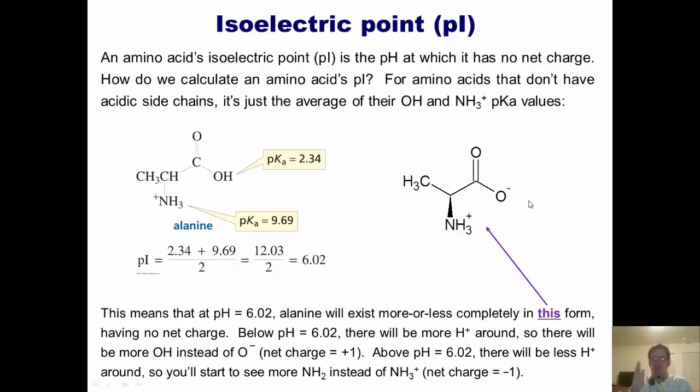So once again, at pH 6.02, which is alanine's isoelectric point, it will exist exclusively in this form. As we get lower pH, we start to protonate this O-, which gives alanine more and more a net plus 1 charge. As we get higher pH, we start to deprotonate stuff. We remove one of these protons off of the NH3+, making it an NH2, giving alanine an overall net minus 1 charge. I hope that makes sense.